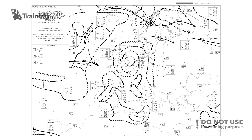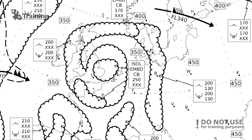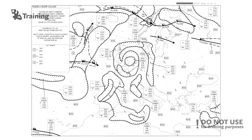Significant weather charts show dangerous cloud build-ups and jet streams and their levels. For example, here we can see a large cumulonimbus cloud indicated from the ground — 'XXX' means from the ground to flight level 240 — and pilots should avoid this cloud if possible. There may also be turbulence between flight levels 200 and 130, and turbulence may be encountered at those same levels due to the cumulonimbus clouds. This chart covers altitudes from flight level 100 to 450.